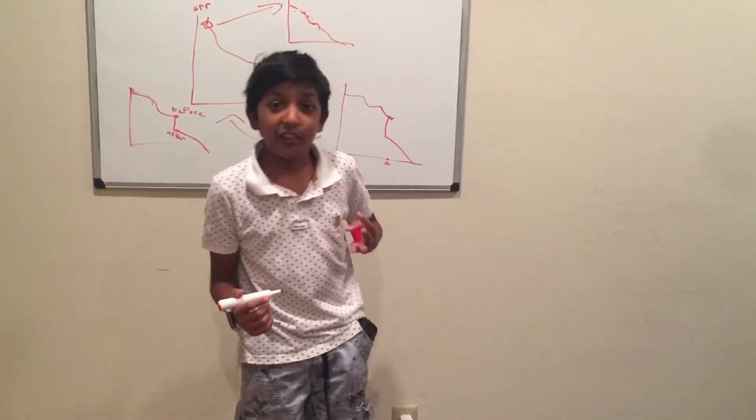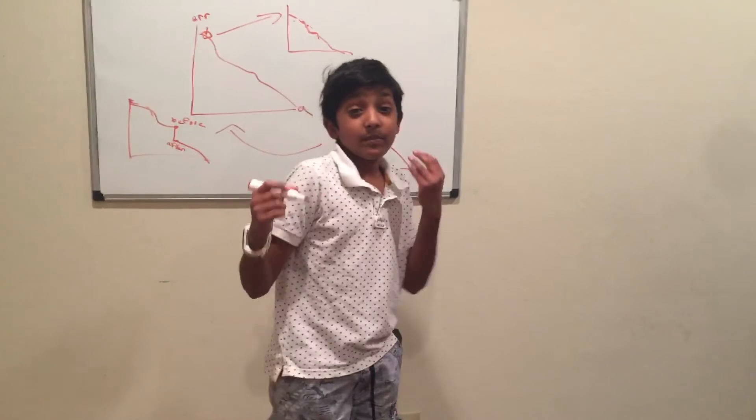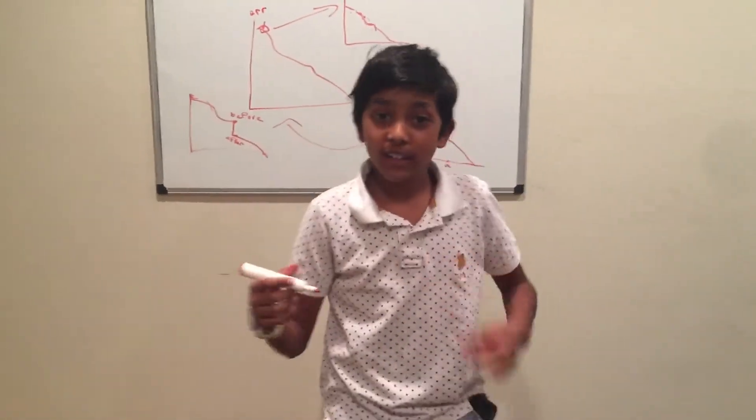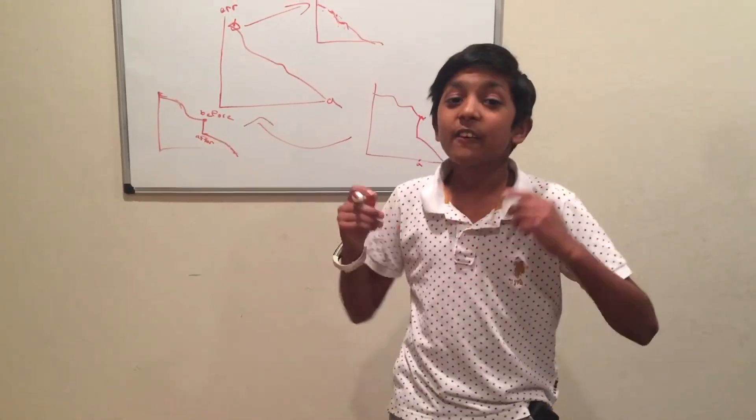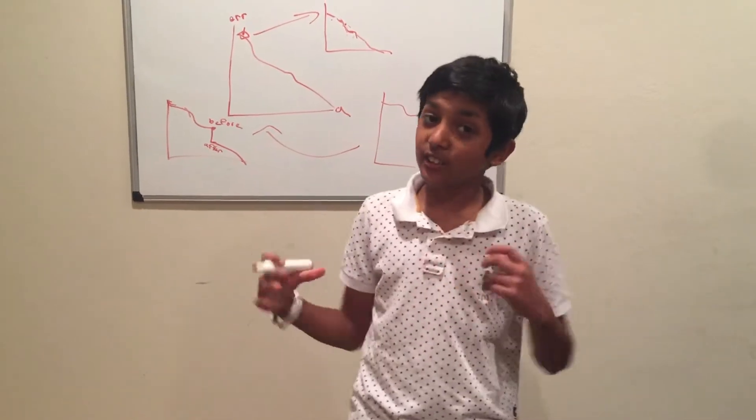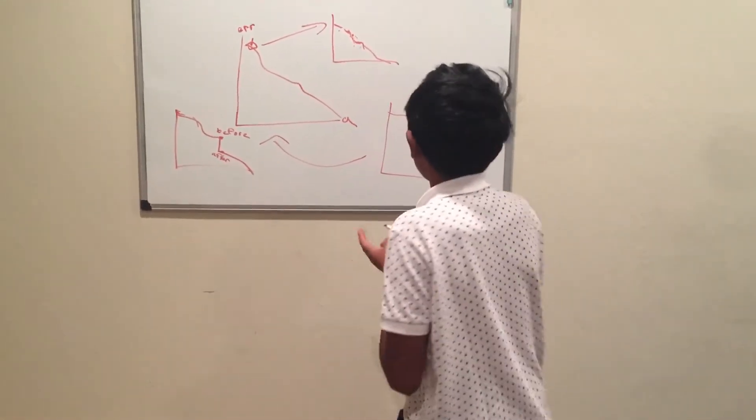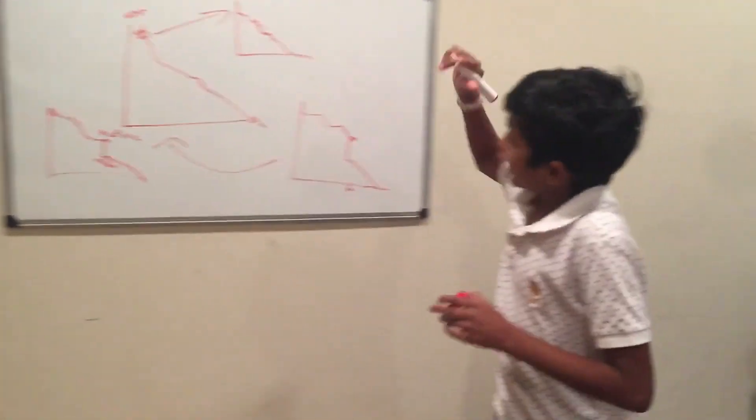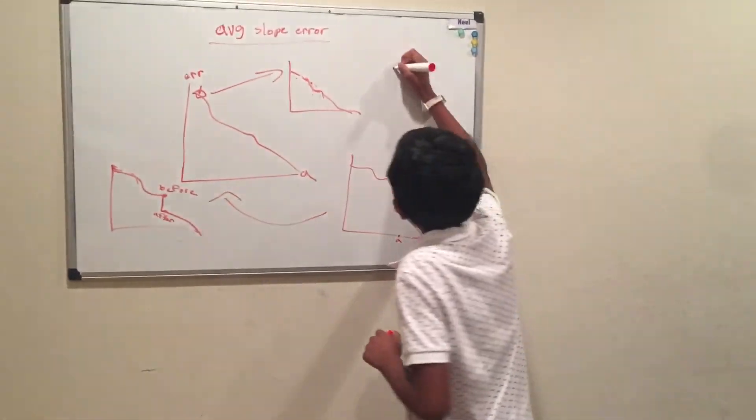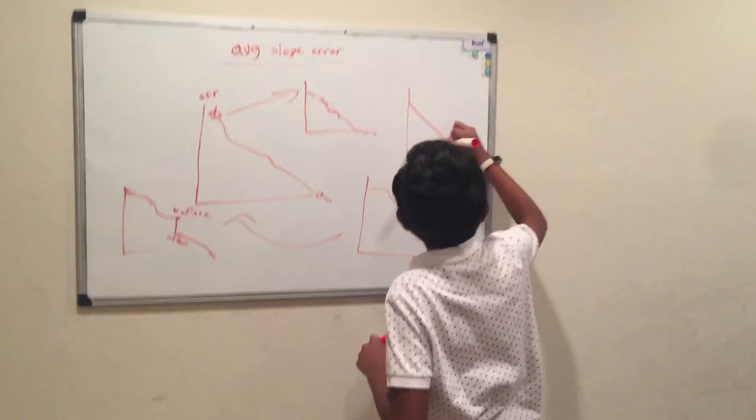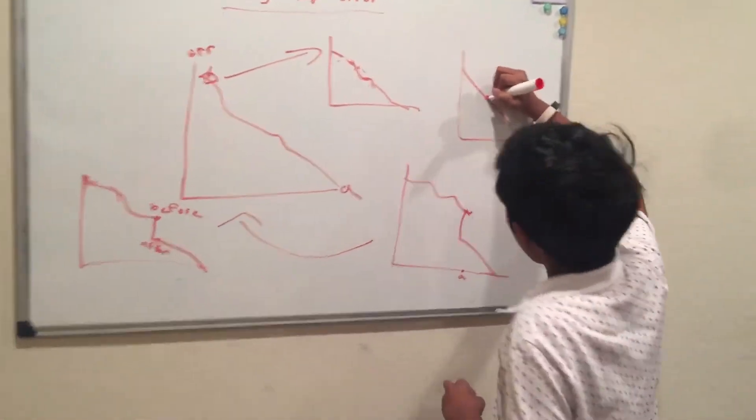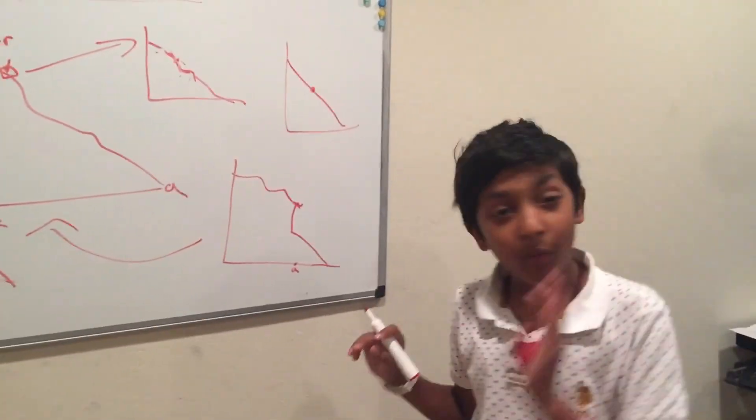This is the basic gradient descent though, but different variations have made it so the steeper it is, the bigger the learning rate or the faster the ball will roll. So back to this line, you have a line here and then you have a point.